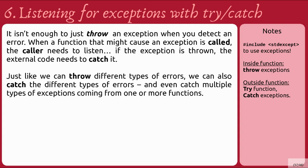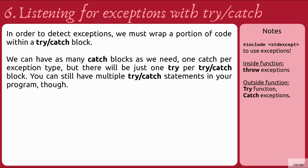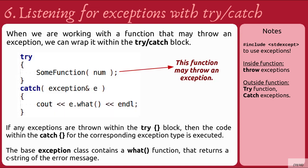It isn't enough to just throw an exception when you detect an error. When a function that might cause an exception is called, the caller needs to listen. If the exception is thrown, the external code needs to catch it. Just like we can throw different types of errors, we can also catch different types, and even catch multiple types of exceptions coming from one or more functions. To detect exceptions, we must wrap a portion of code within a try-catch block. We can have as many catch blocks as we need with one catch per exception type, but there will be just one try per try-catch block. You can still have multiple try-catch statements in your program, though.